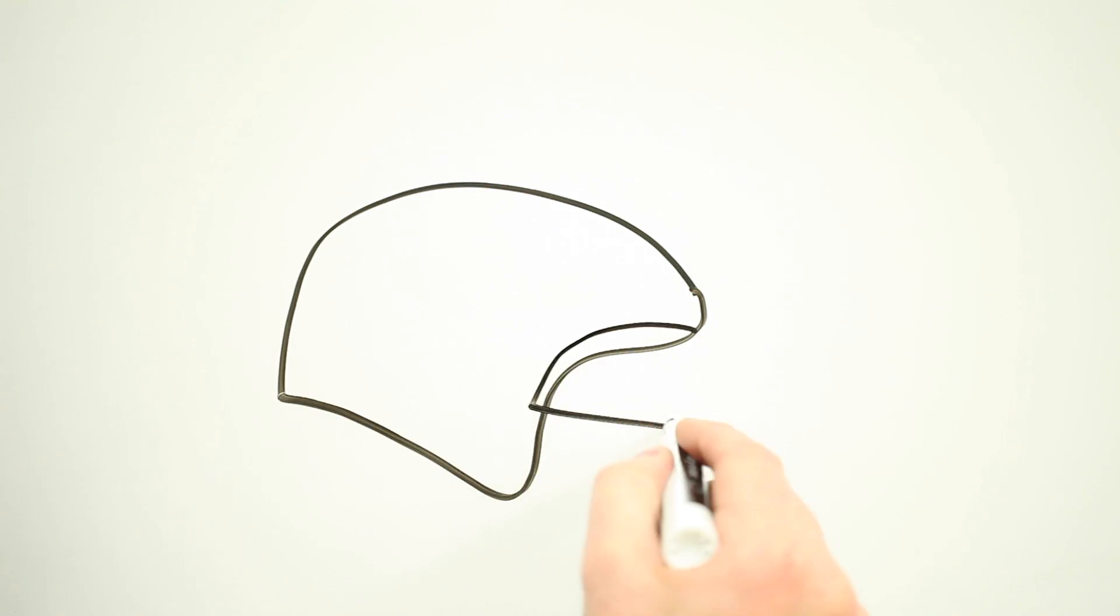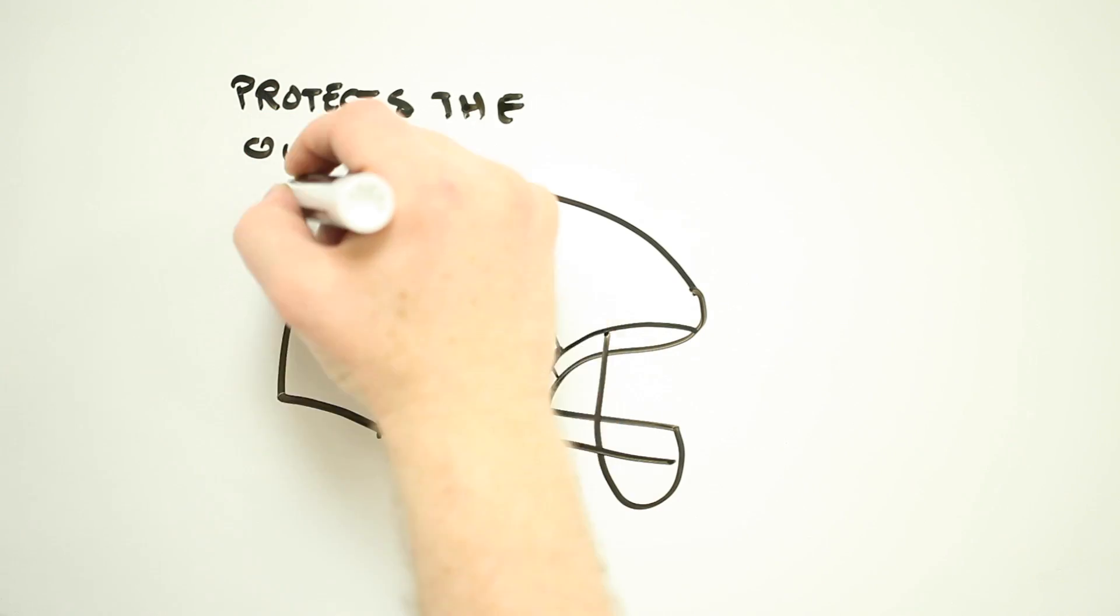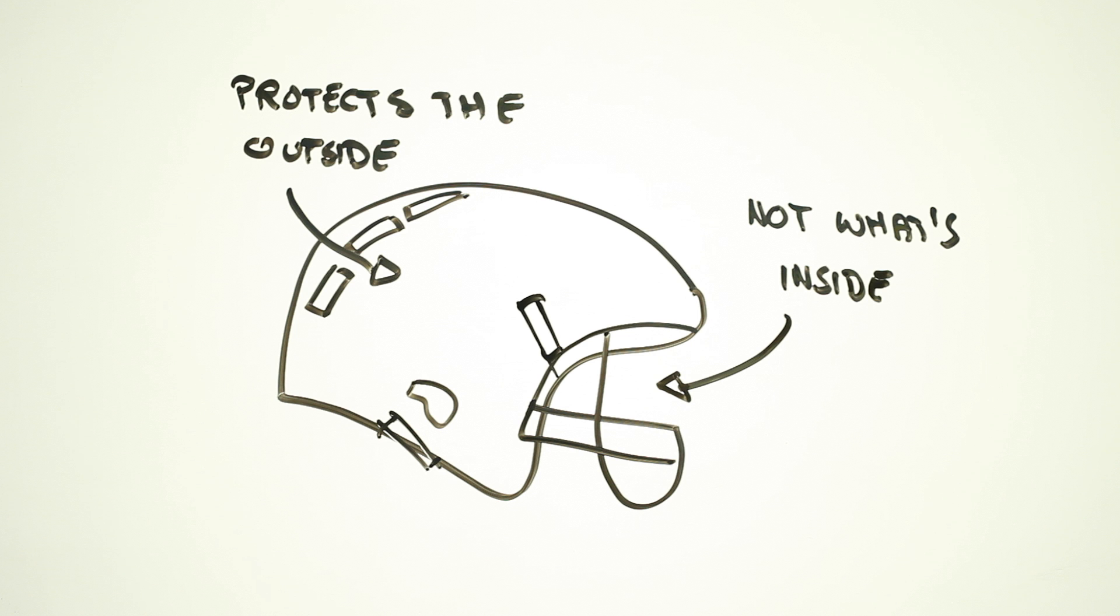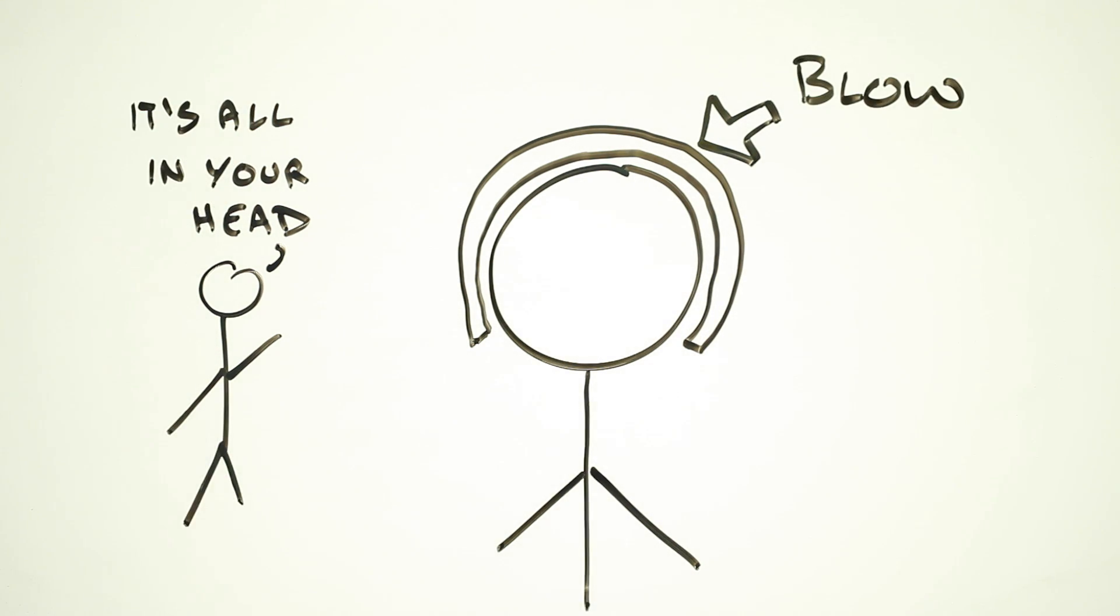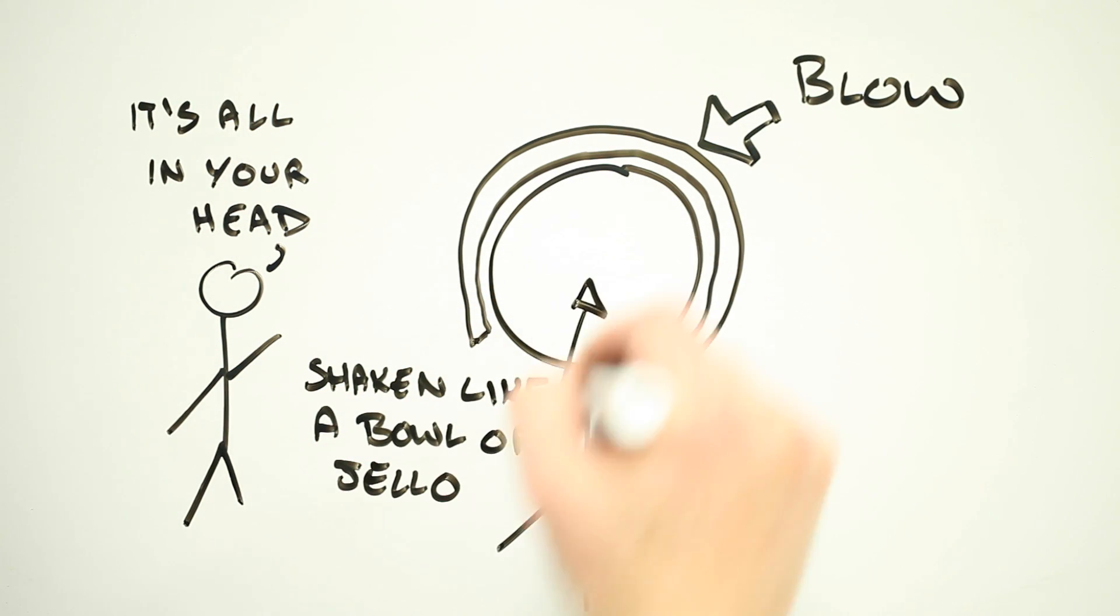Number five: Helmets are designed to stop skull fractures, not prevent concussion. Concussions result from your brain being shaken about when your head takes a blow. While helmets may take some of the edge off this, they can't prevent it altogether.